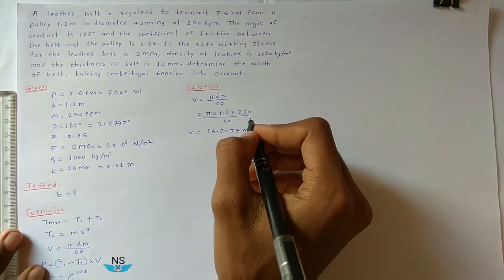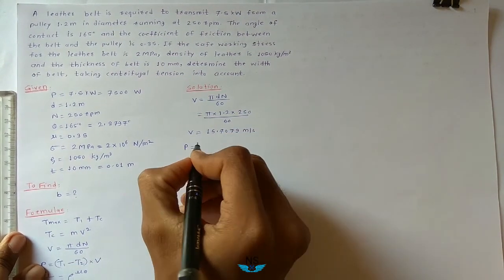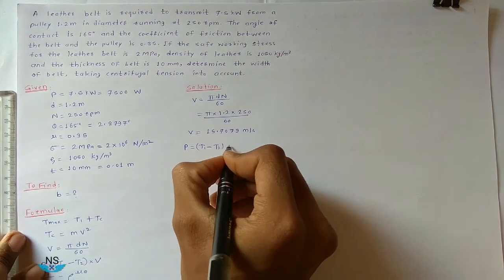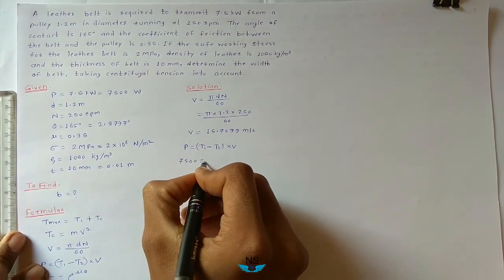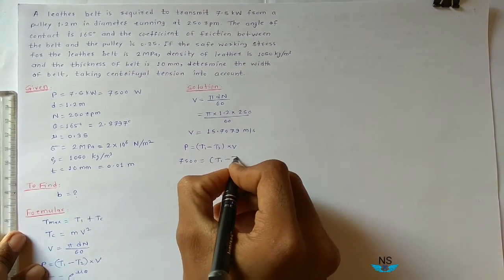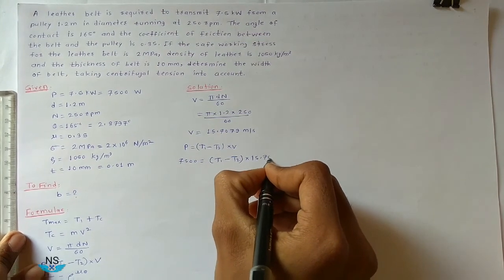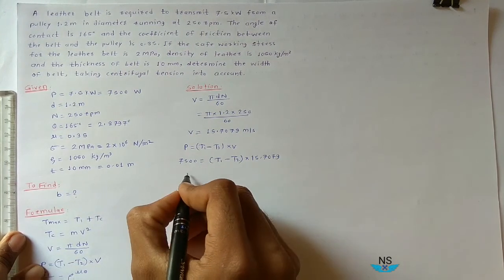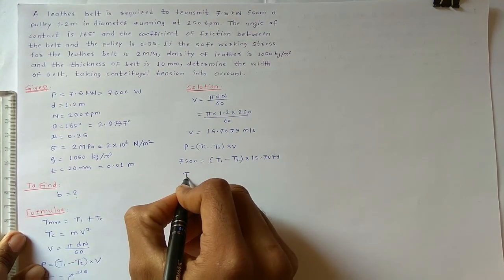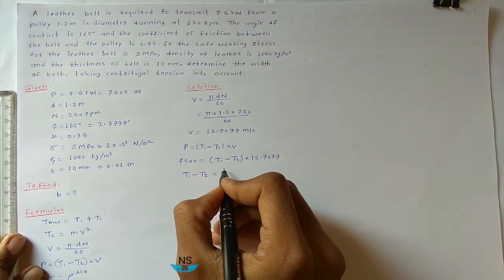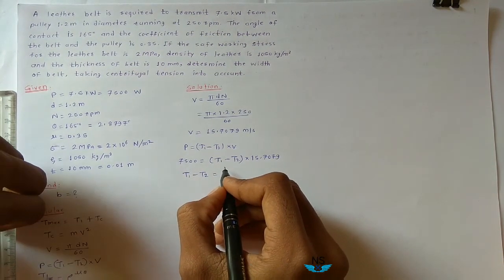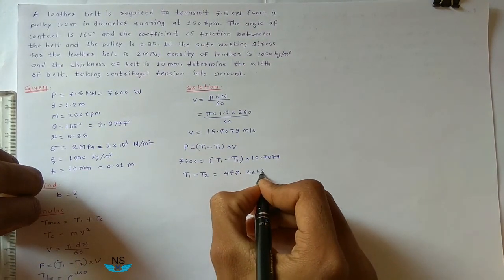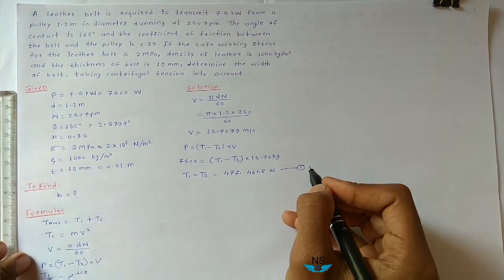Now find T1 and T2. Using power equals T1 minus T2 times V: 7500 equals T1 minus T2 times 15.7079. So T1 minus T2 equals 7500 divided by 15.7079, giving T1 minus T2 equal to 477.4648 Newton. This is the first equation.